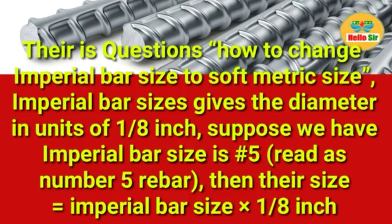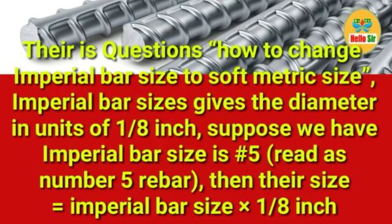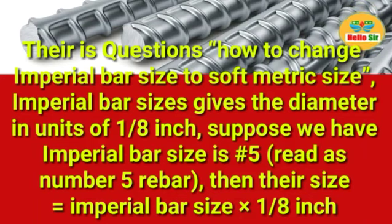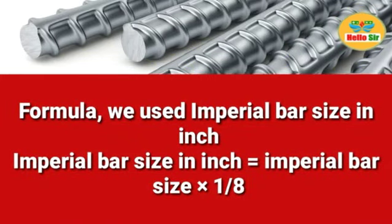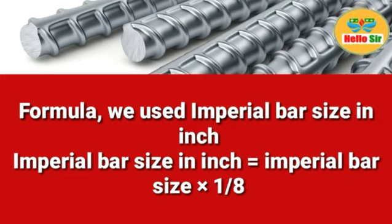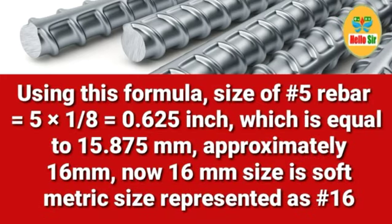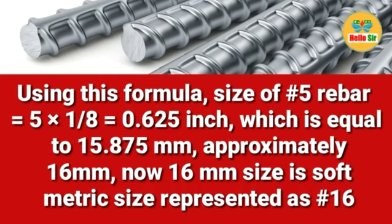Here we discuss how to convert imperial bar size to metric size. Imperial bar size gives the diameter in units of one-eighth inch. For example, if the imperial bar size is number five rebar, denoted by H5, then its size equals the imperial bar size multiplied by one-eighth inch. Using this formula — imperial bar size in inch equals imperial bar size multiplied by one-eighth — the size of number five rebar is 5 × (1/8), which equals 0.625 inch.